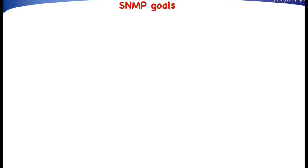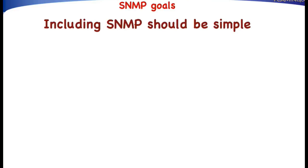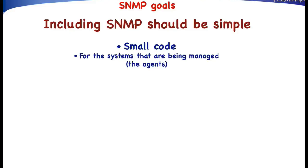The second goal the SNMP designers had in mind is that it should be relatively easy to include SNMP software in systems. This means that the code should be very small. However, this only applies for the systems that are being managed — the agent systems. Since we still need a lot of functionality, the consequence is that the code in the manager should be quite complex. So basically, the decision is to make manager software complex, but agent software very simple.